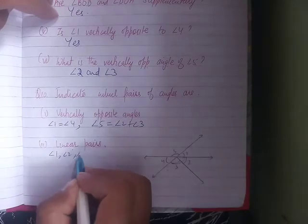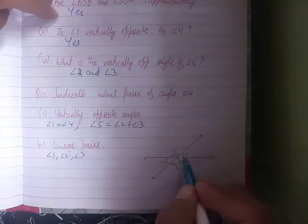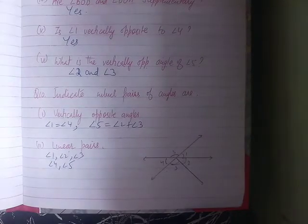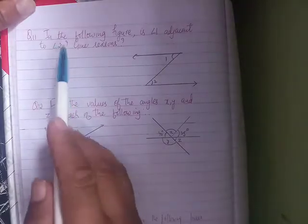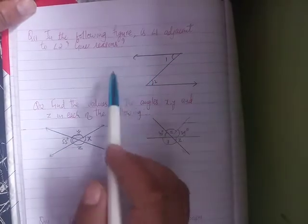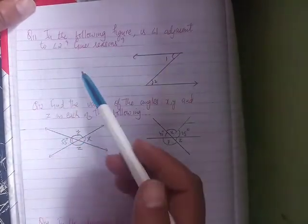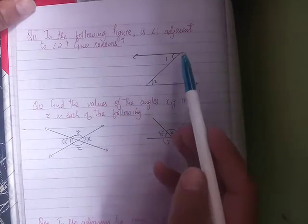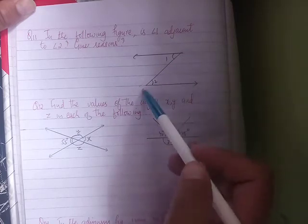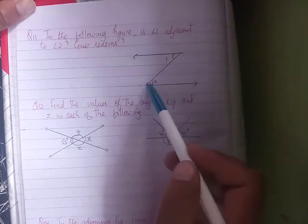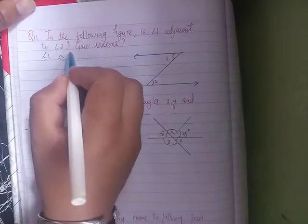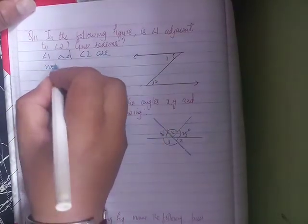In the following figure, is angle 1 adjacent to angle 3? Give reason. Angle 1 and angle 3 are not adjacent because they have no common vertex. Find the values of the angles x, y, and z in each of the following. Adjacent means common vertex. Angle 1 and angle 2 are not adjacent.